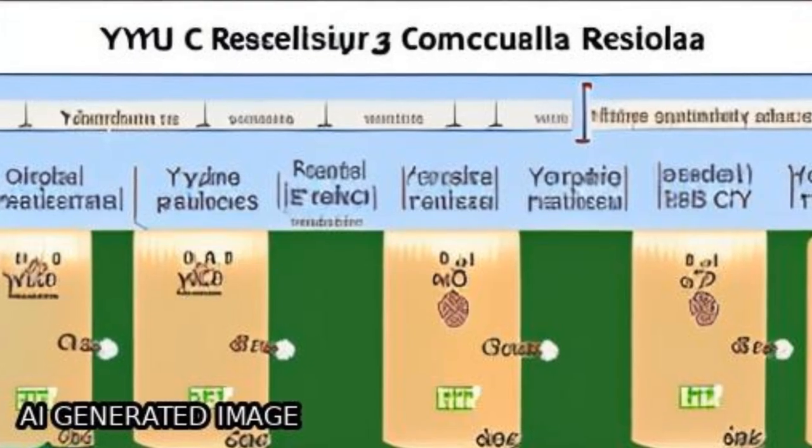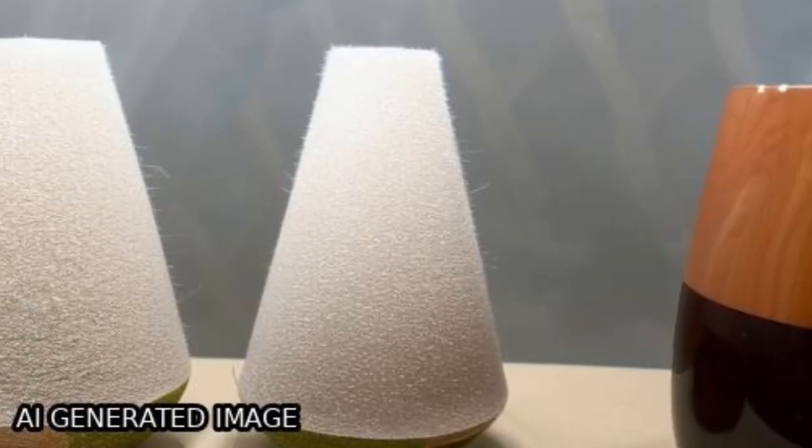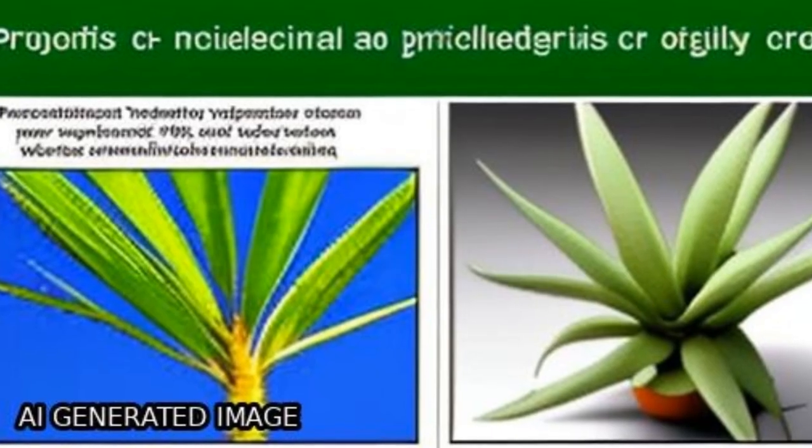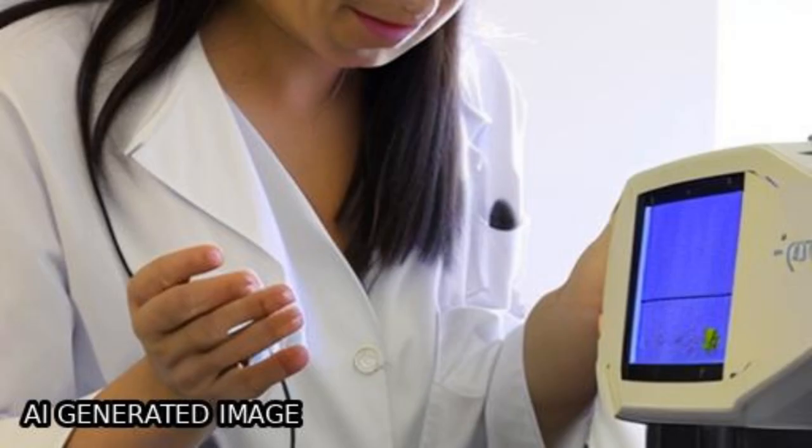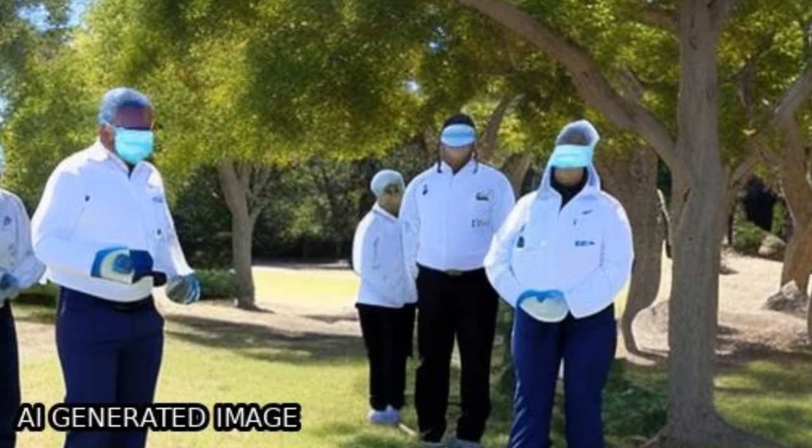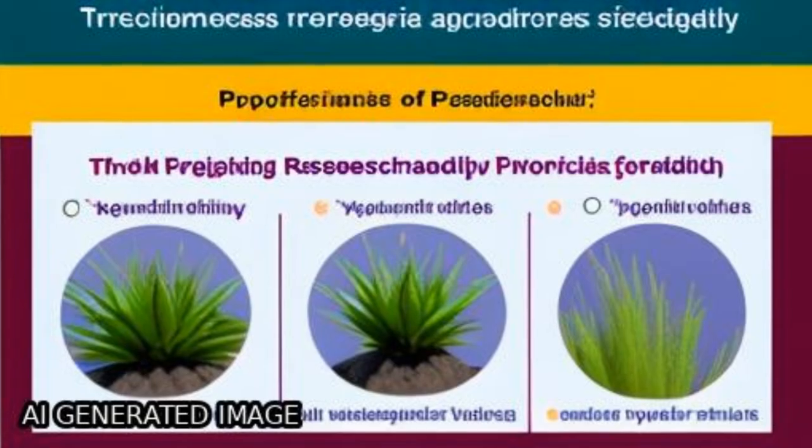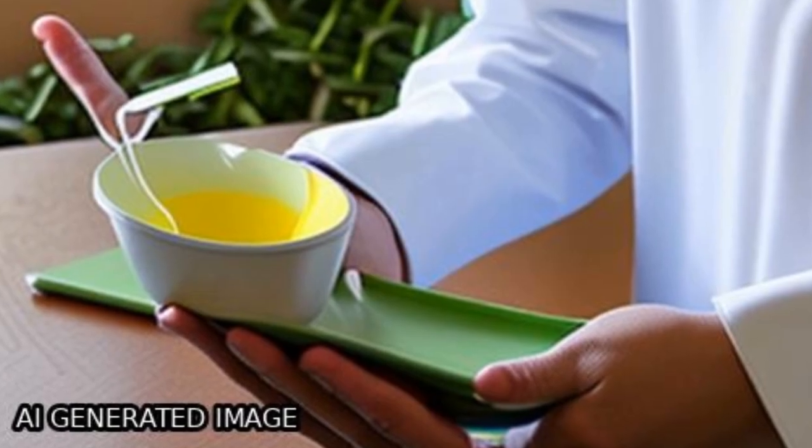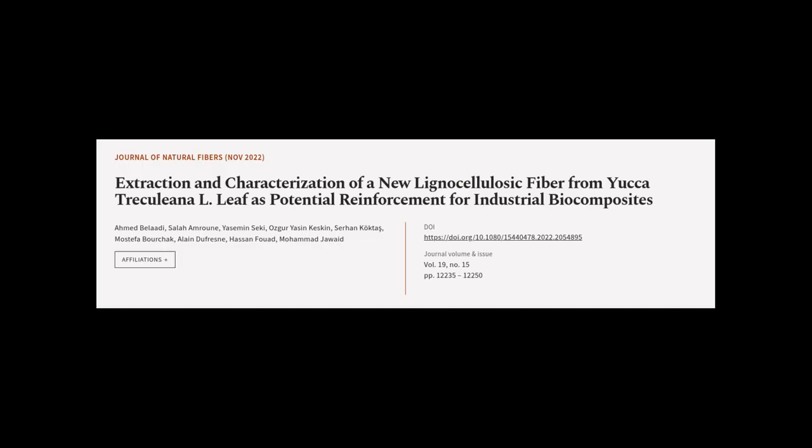The average mechanical properties of the fiber are 222 MPa for the tensile strength, 2.47% for the strain at break, and the Young's modulus is equal to 16.85 GPa. These results prove that YT fiber can be used as reinforcement in making lightweight industrial biocomposites with thermoplastic or thermosetting polymers. This article was authored by Ahmed Belodi,